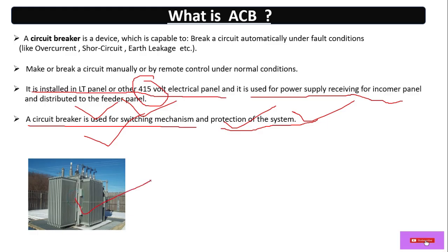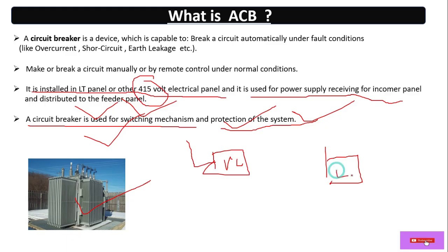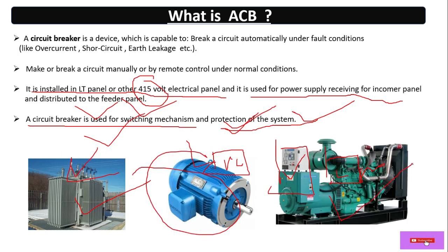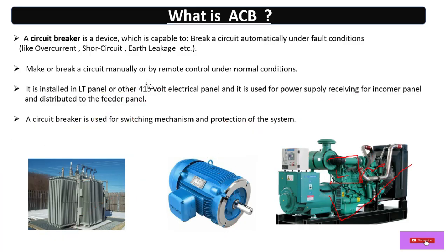What systems will it protect? It will protect the transformer — from the HT side, VCB will protect, and from the LT side ACB will provide protection, with the transformer in between. It will also protect motors and generators. In case of any fault, it will not allow the fault to transfer towards our system. These are the functions of the ACB Air Circuit Breaker.